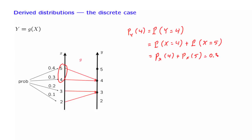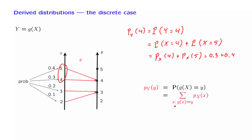In this numerical example, it would be 0.3 plus 0.4. More generally, for any given value of little y, the probability that the random variable Y takes this particular value is the sum of the probabilities of the little x that result in that particular value. So the probability that Y, which is the same as g(x), takes on a specific value is the sum of the probabilities of all possible values of little x, where we only consider those values of little x that give rise to the specific value little y that we're interested in.